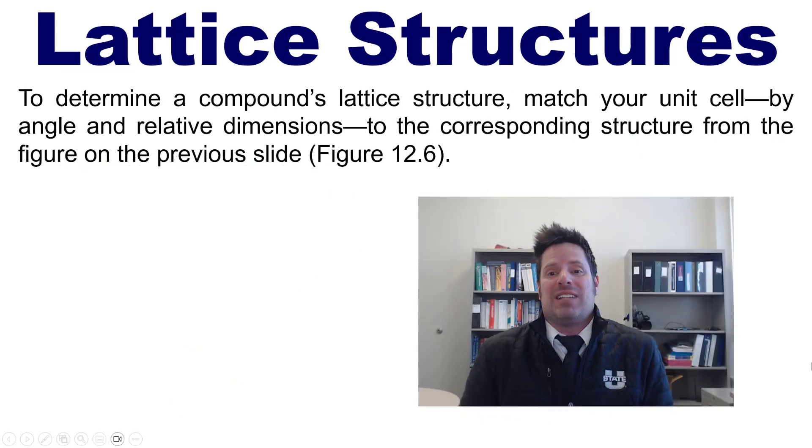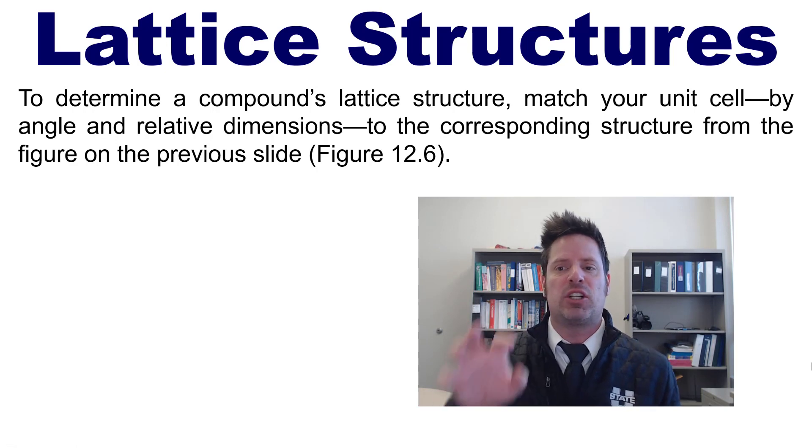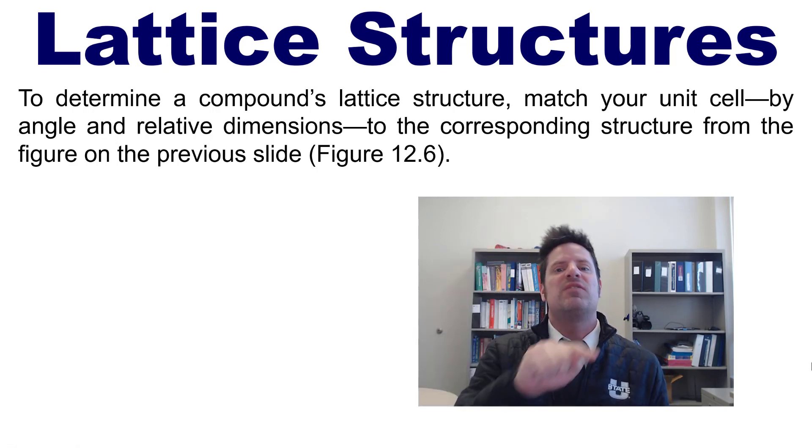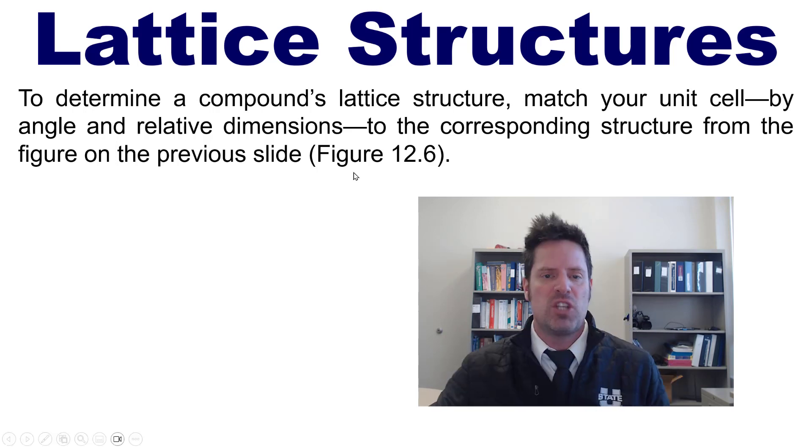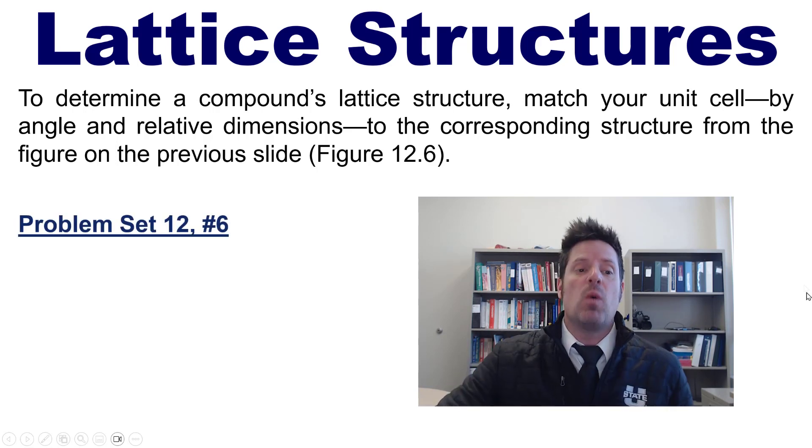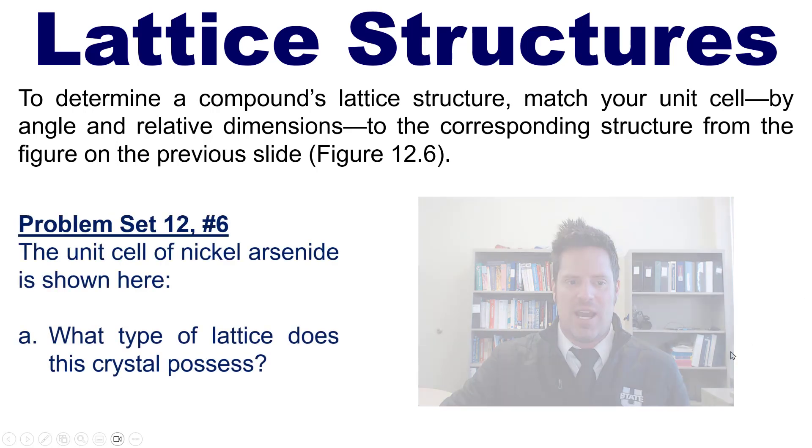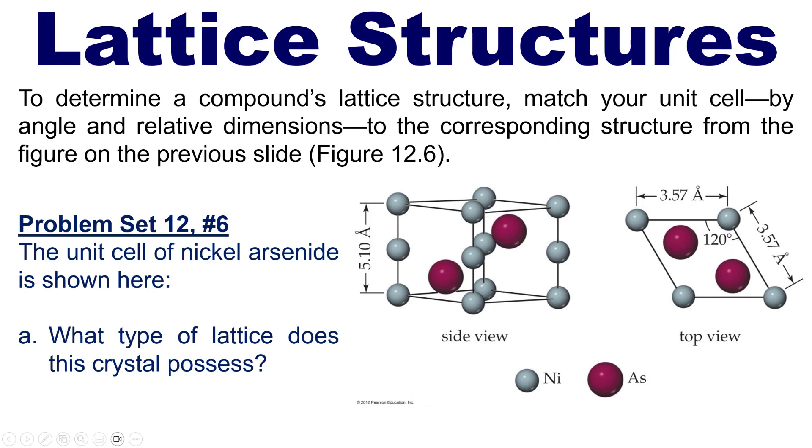To determine a compound's lattice structure, you have to match your unit cell by angle and relative dimensions to the corresponding structure from the figure that I just showed you, which happens to be figure 12.6 from our text. This takes us to a beautiful example problem. The unit cell of nickel arsenide is shown right here. I want you to tell me what type of lattice this crystal possesses.